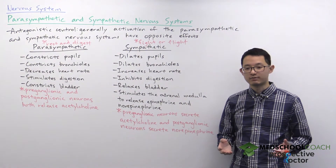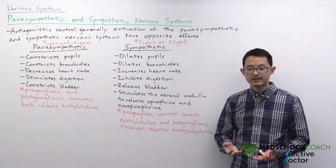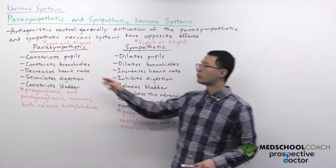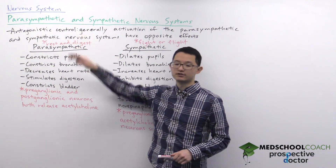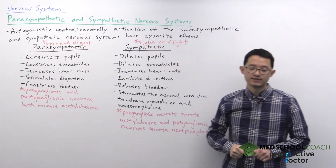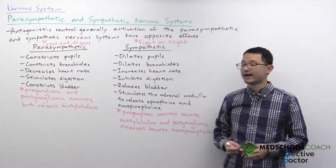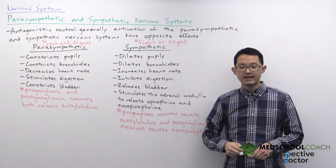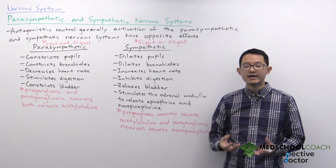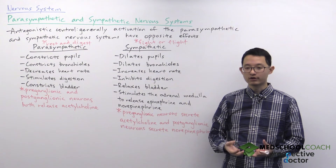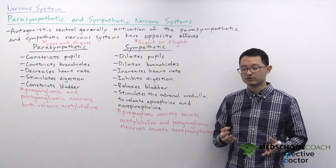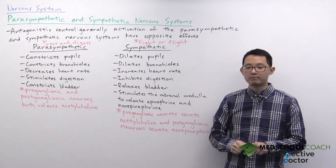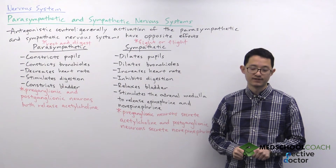These two responses are essentially opposites, so we often discuss the antagonistic control of these two nervous systems. This is referring to the fact that these two nervous systems essentially target many of the same organs, but activation of the two systems results in opposite effects in those organs.